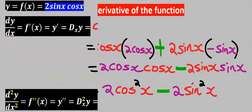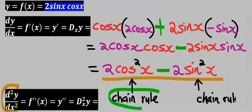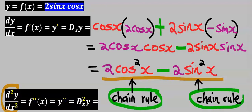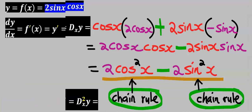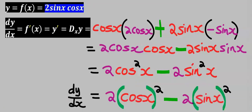Next, we are going to find the second derivative of this function, and here we are going to apply the chain rule. Before we apply the second derivative, we are going to rewrite each of these functions. Now we can apply the second derivative.